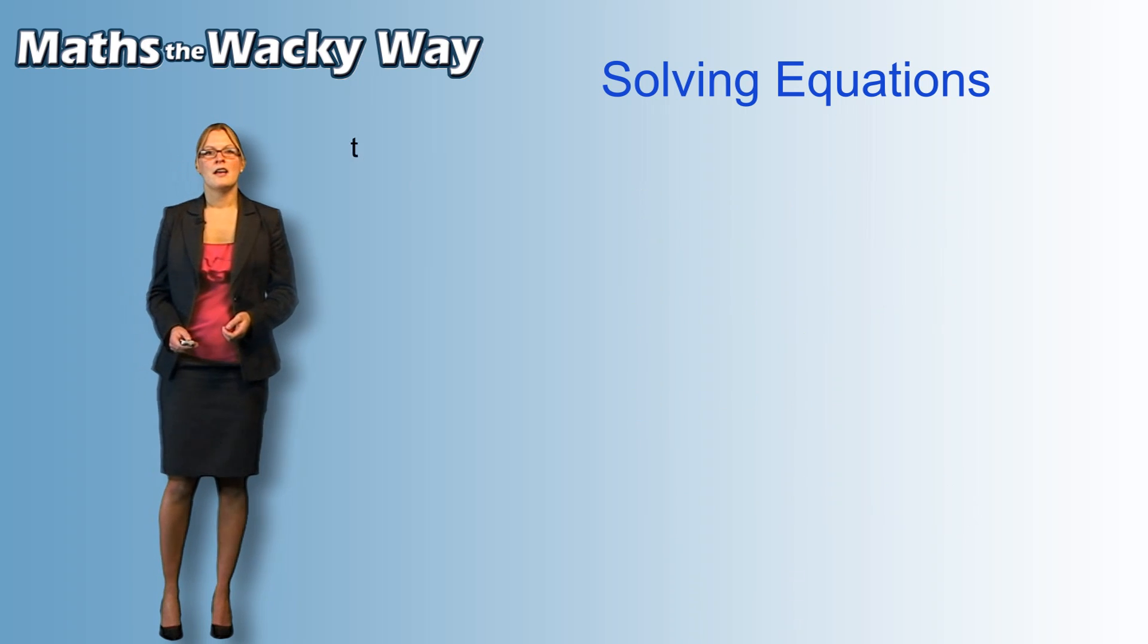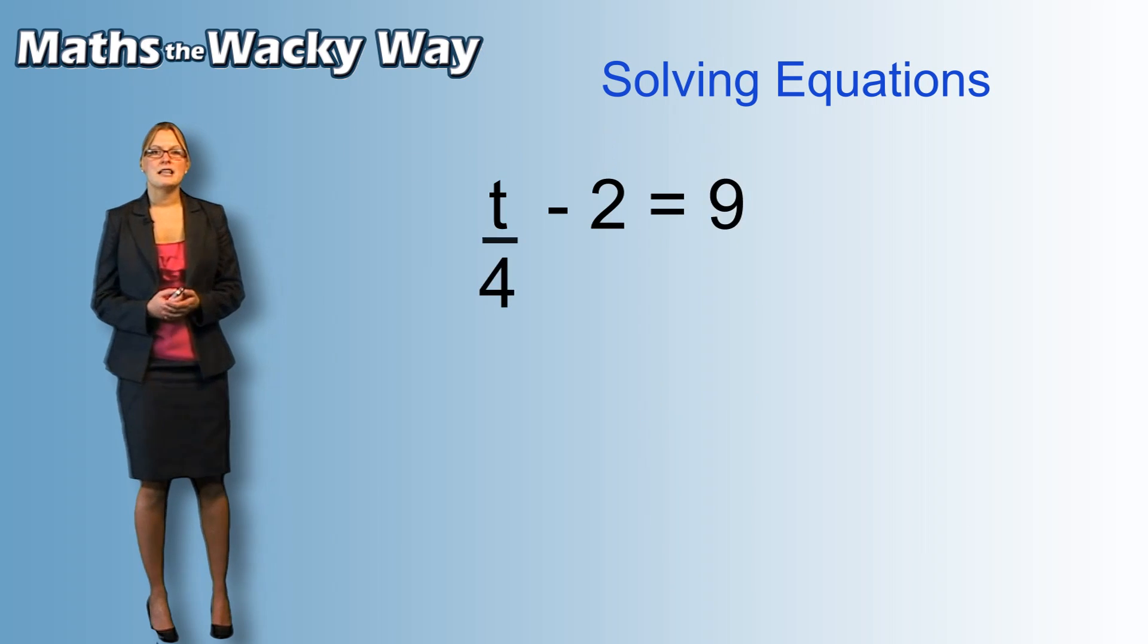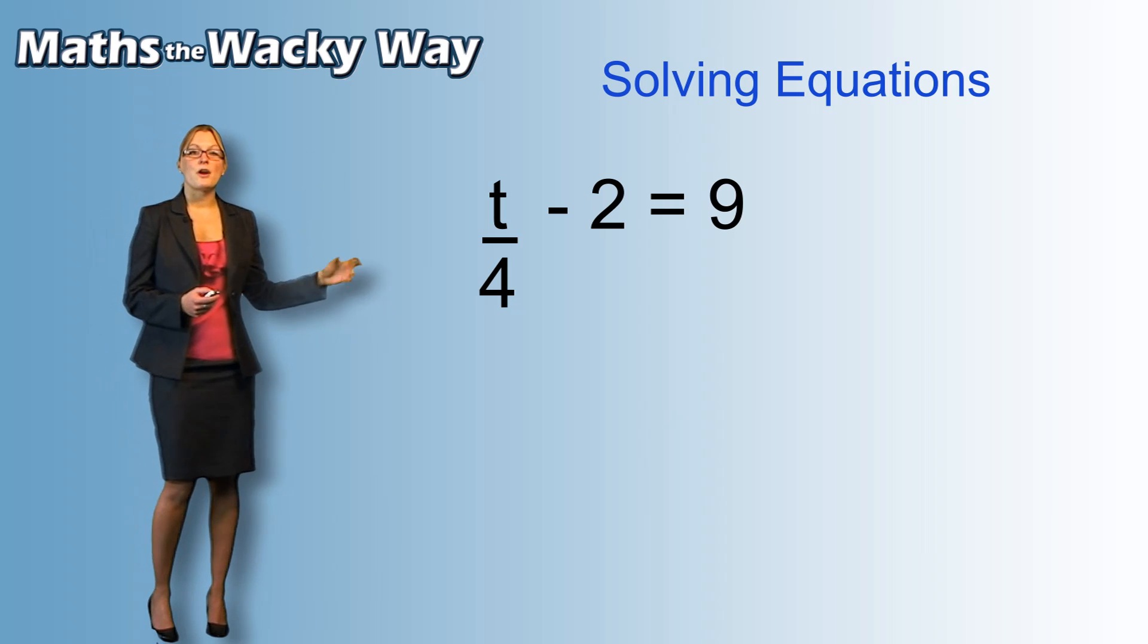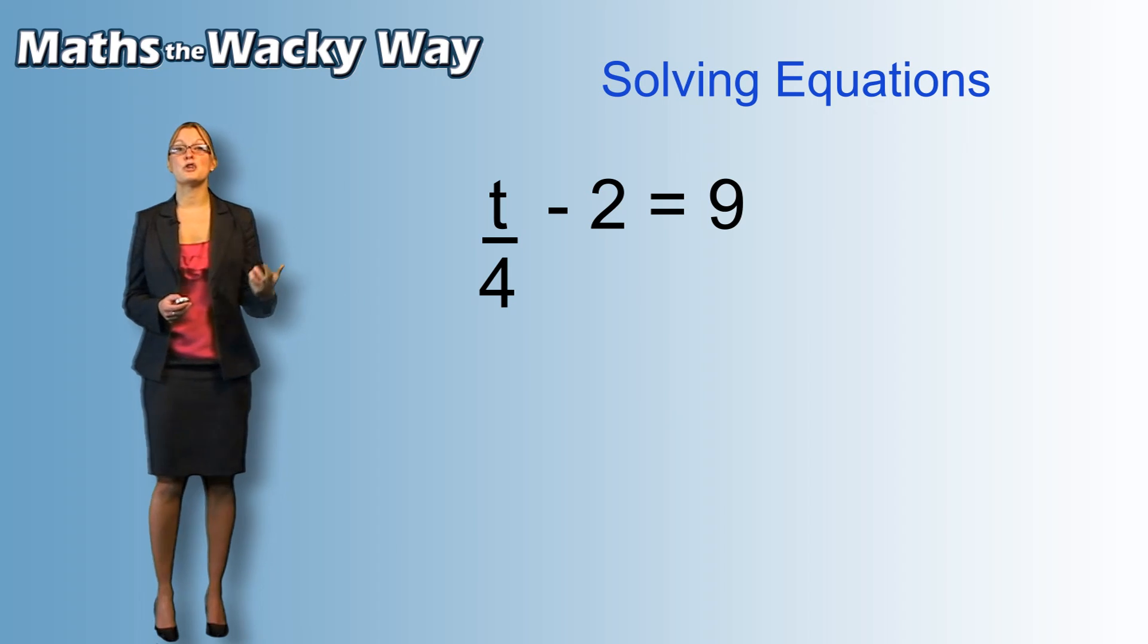Let's do another one. So if we take the equation, t divided by 4 take away 2 equals 9. Now this is similar to what we've seen already. We have our unknown t, here's the character that we care about.